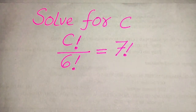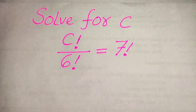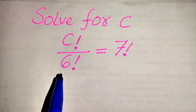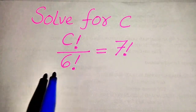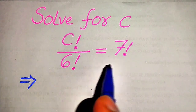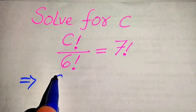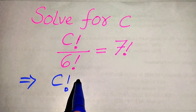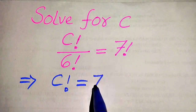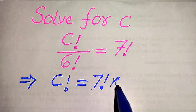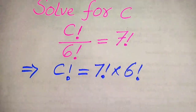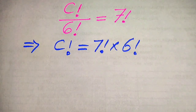Here you can see that when 6 factorial is on the left-hand side divided, when we move it to the right-hand side it is multiplied by 7 factorial. So it will be written as: c factorial equals 7 factorial multiplied by 6 factorial.